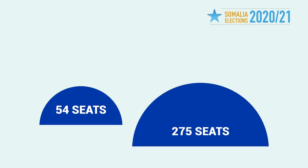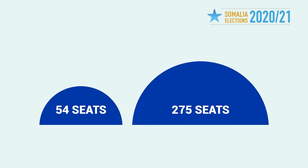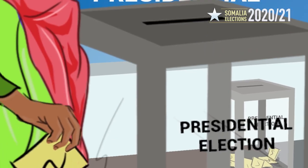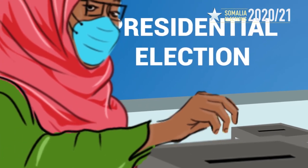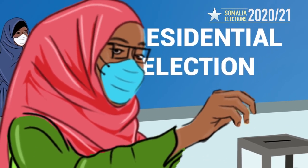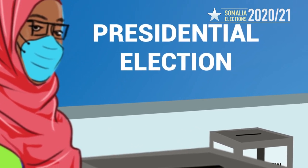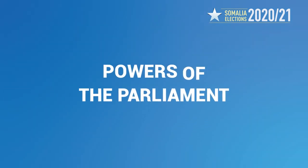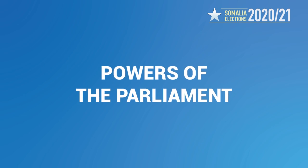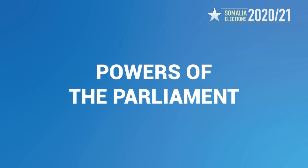Parliament consists of two chambers: a 54-member upper house and the house of the people comprising 275 members. In some instances, both chambers are endowed with similar duties and powers, such as the election or impeachment of the federal president. In other instances, specific powers are vested in only one of the chambers.